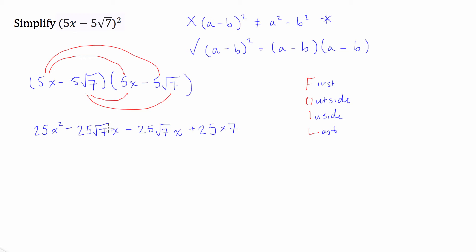So basically what we're going to do now is we're just going to combine our like terms, the middle two, and we're going to compute that little multiplication there. So we're going to put these two together, and we have 25x squared minus 50 square root 7x.